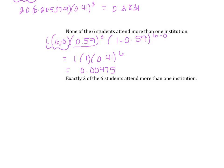Stop the video and determine the probability that exactly two of the six students attend more than one institution. When you're ready, hit play and we'll do this problem together. So we want to choose two of the six: six choose two, times 0.59 to the power of two, times one minus 0.59 to the power of six minus two.